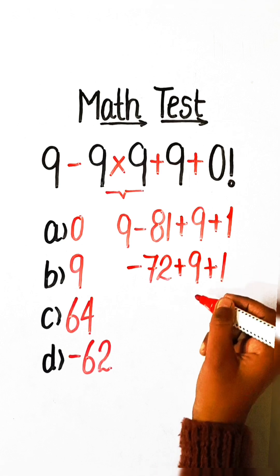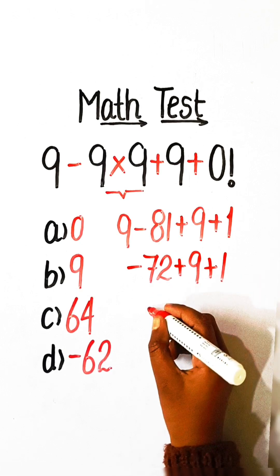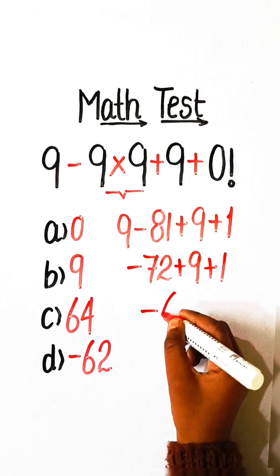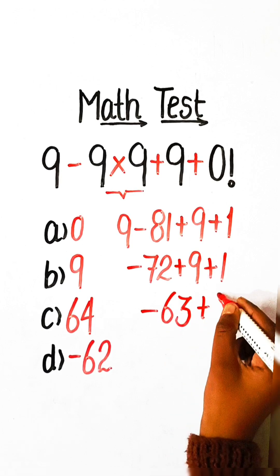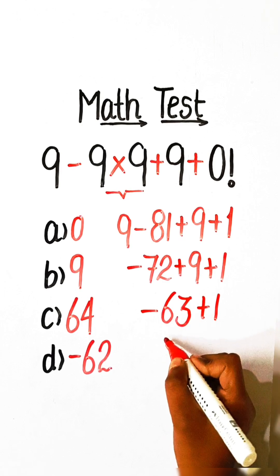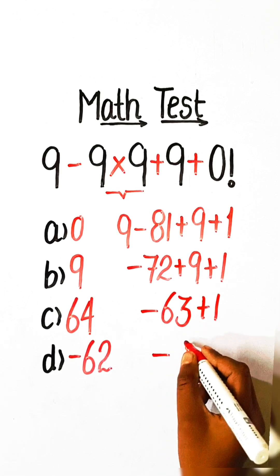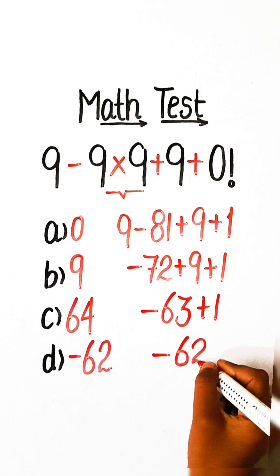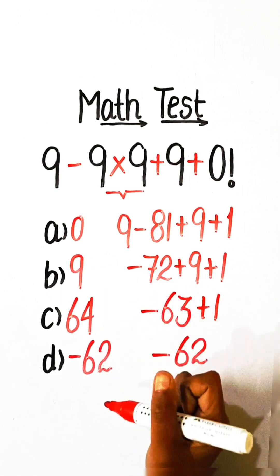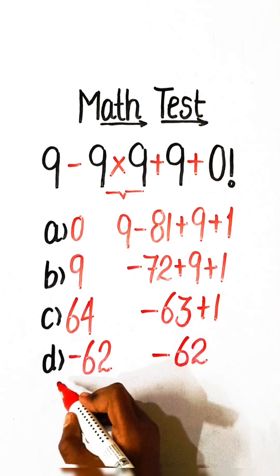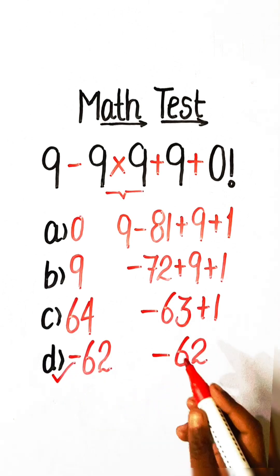9 minus 81 is minus 72, plus 9 is minus 63, plus 1 equals minus 62. In option D we have minus 62, so option D will be our correct answer.